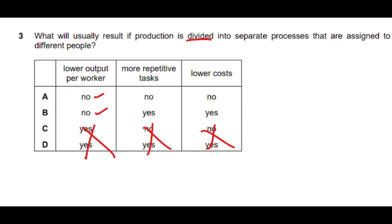When production is divided into separate processes, each worker specializes in one process and performance increases, so output per worker increases rather than decreasing. More repetitive tasks — definitely, when tasks are divided into parts, one person repeatedly does the same thing. Lower cost — yes, when workers specialize and work is divided, cost of production decreases. So option B (more repetitive tasks) is the correct answer.